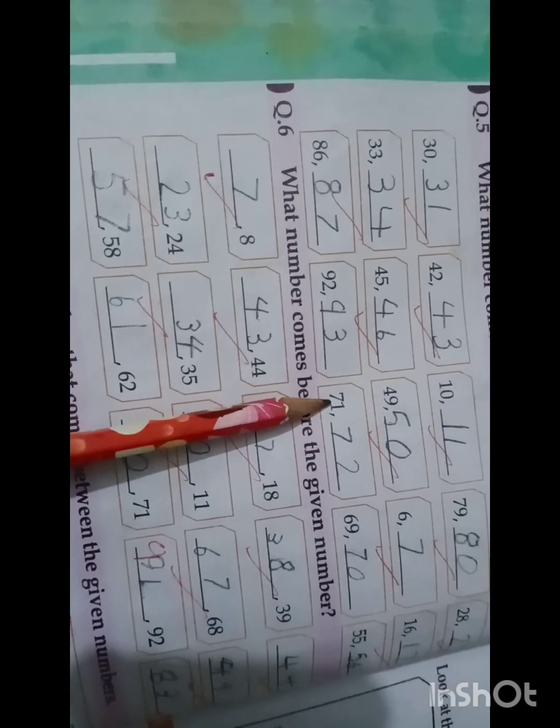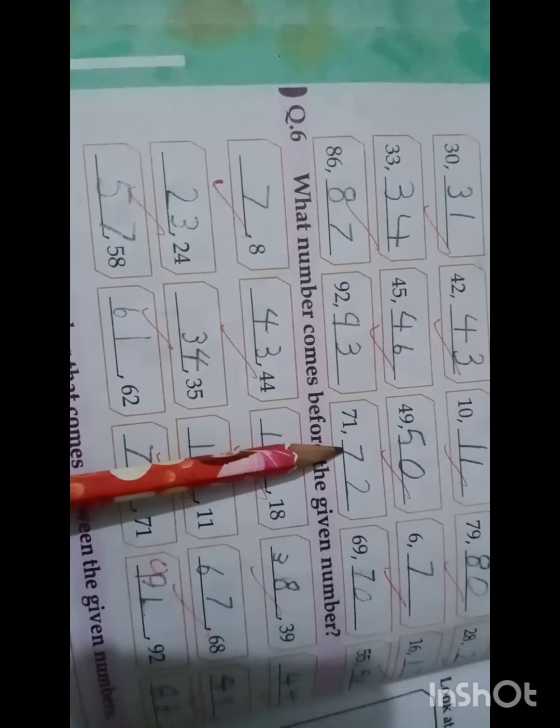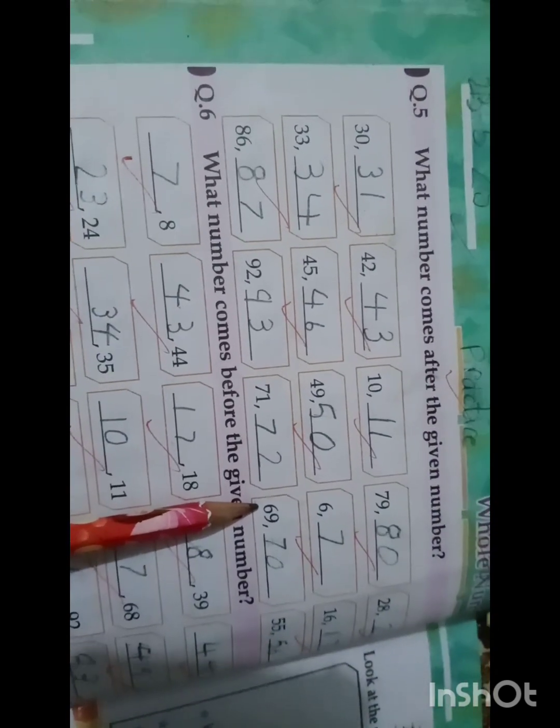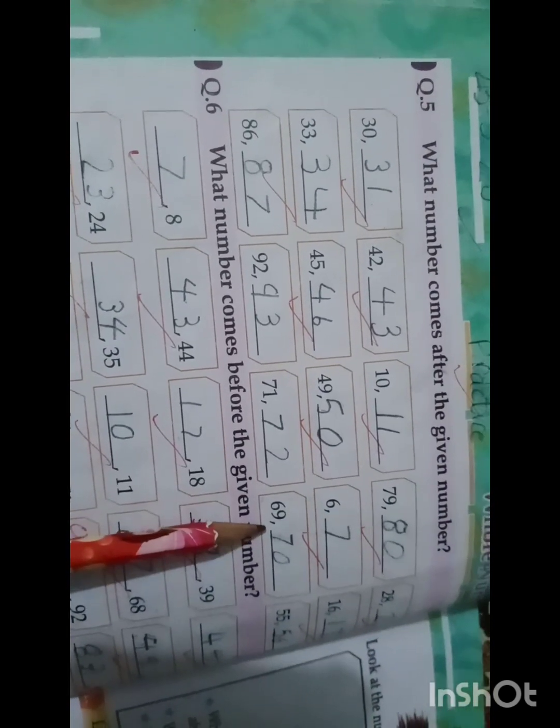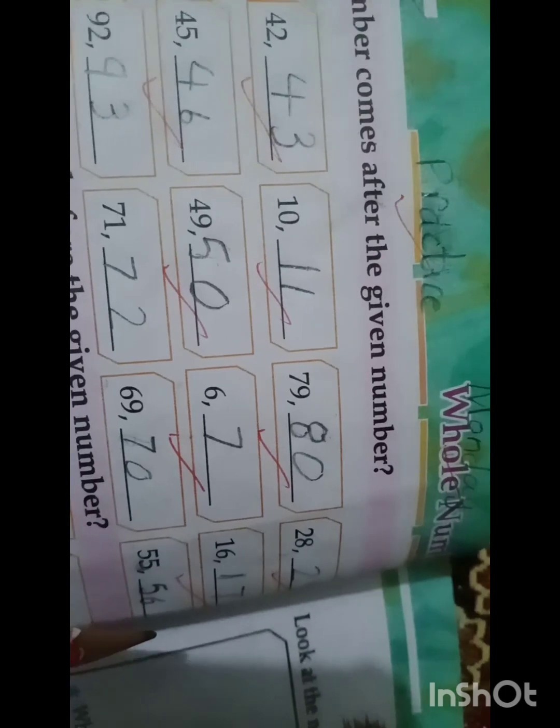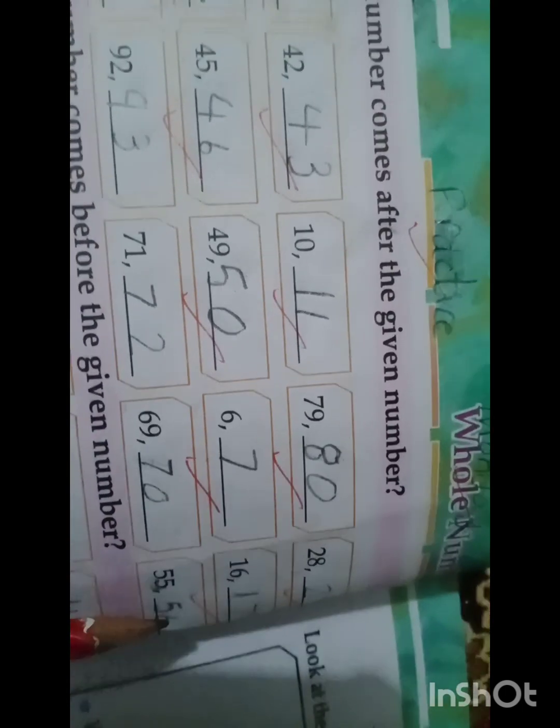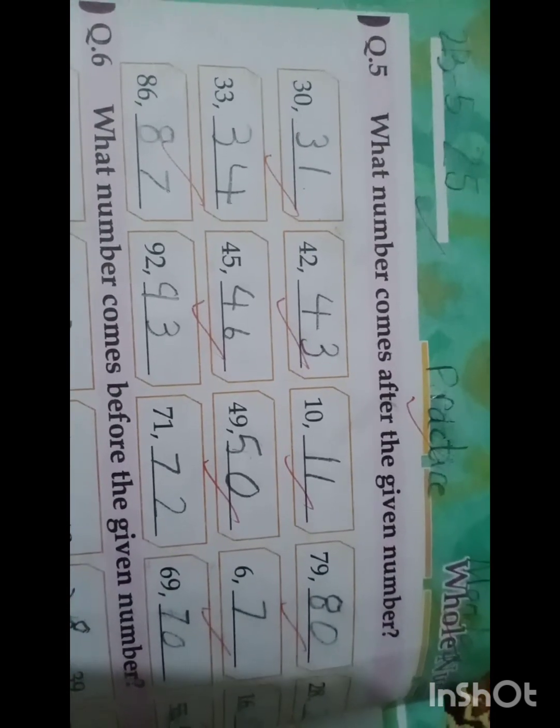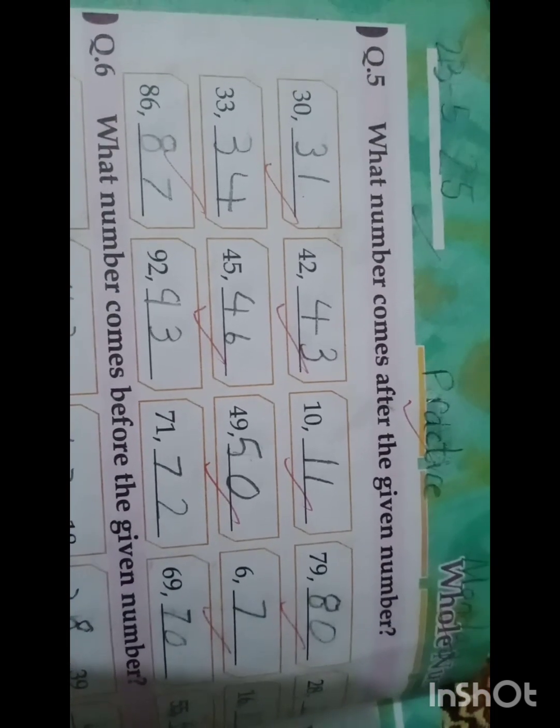After 71 comes number 72. After 69 comes number 70. And the last one, 55. After 55 comes 56. My dear students, don't spoil your handwriting. You do this work. Practice this work again and again, okay? Take care, Allah Hafiz.